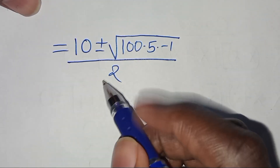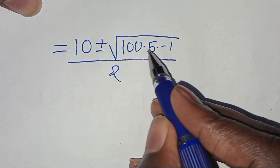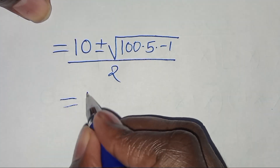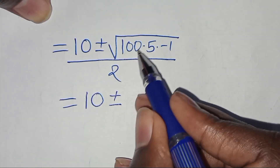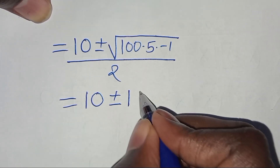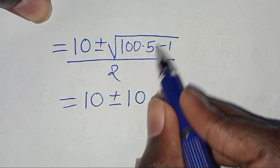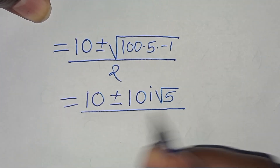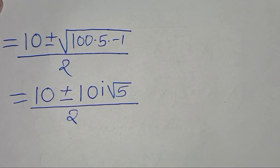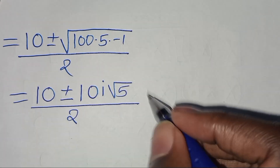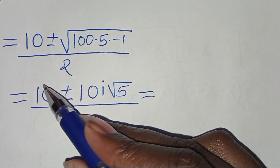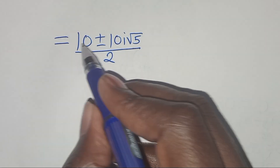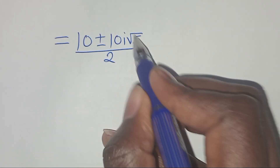So here we have 10 plus or minus the square root of 100, which is 10, times the square root of negative 1, which is i, times the square root of 5, all divided by 2.